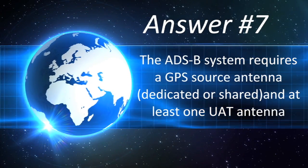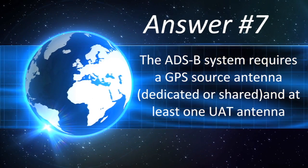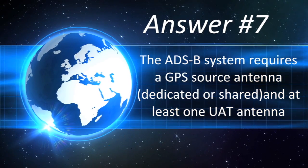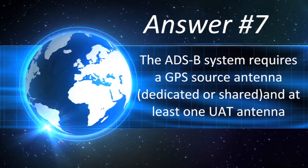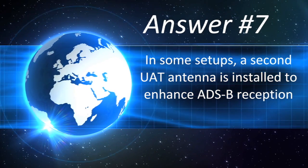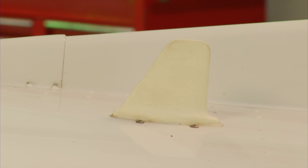How many antennas does an ADS-B system require? The ADS-B system requires a GPS source antenna — either dedicated or shared — and at least one UAT antenna. If the aircraft already has a GPS antenna, that source potentially could be used, and then only one additional antenna would be needed. In some setups, a second UAT antenna is installed to enhance ADS-B reception: one on the upper part of the fuselage and one on the lower part of the fuselage.